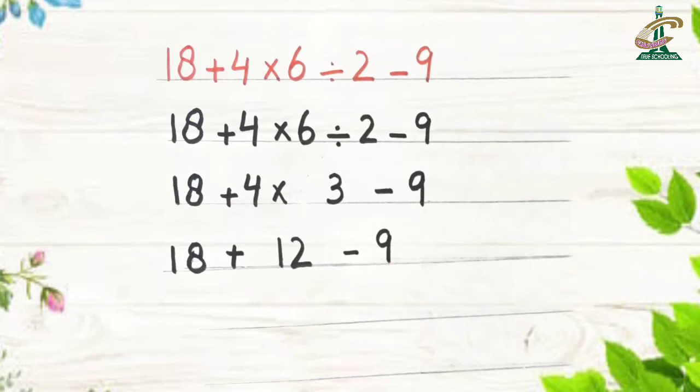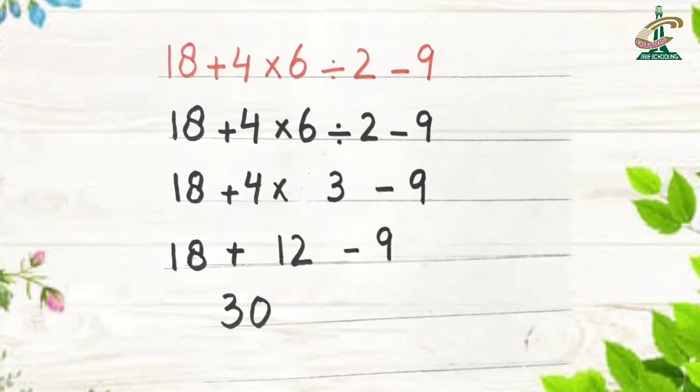Now what will we do? Addition. Which two values will we add? 18 and 12. 18 and 12 will be equal to 30. Yes. Now we will write remaining value as it is.